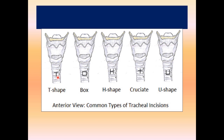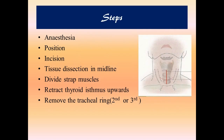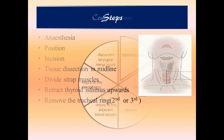Various types of incisions can be made based on shape: T, box, H, cruciate, and U — the most commonly used is a longitudinal incision. Regarding anesthesia, general anesthesia is given to most patients, but in emergencies local anesthesia may be preferred. The patient is positioned supine with the neck extended. Tissue dissection is made in the midline, the neck strap muscles are retracted, and the thyroid isthmus is retracted or divided. The incision is preferably made over the second or third tracheal ring.